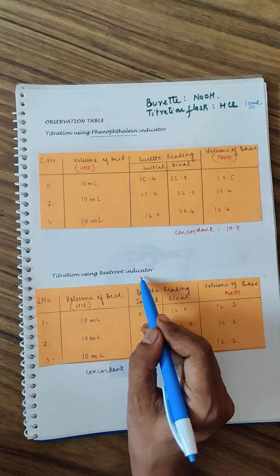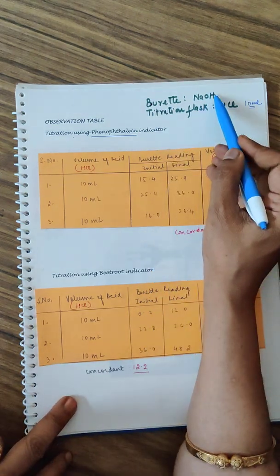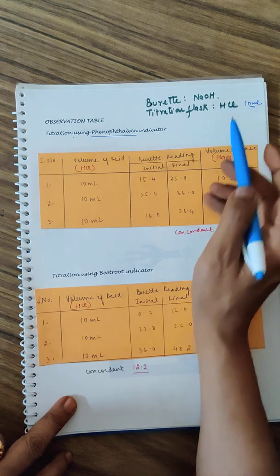When 10.4 ml of NaOH is added, the solution changes color. At the end point, pH is on the basic side. When you see the change in color of phenolphthalein, it changes to lightest possible pink from colorless. The same titration is to be done using beetroot indicator.